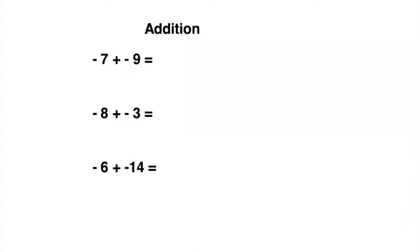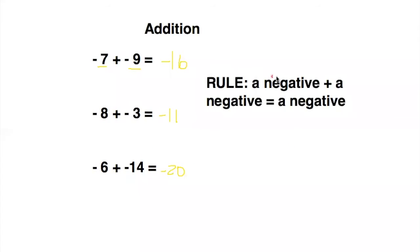Now that you've had enough time to answer these questions, we will go over them. You want to add regularly, so it would be seven plus nine, and you put a negative sign in front of it — seven plus nine equals 16, so the answer is negative 16. Next one: eight plus three is 11, put a negative sign in front — negative 11. Six plus 14 is 20, put a negative sign in front — negative 20. And that is how you add with negative numbers. Here's a quick rule to remember: a negative plus a negative always equals a negative.